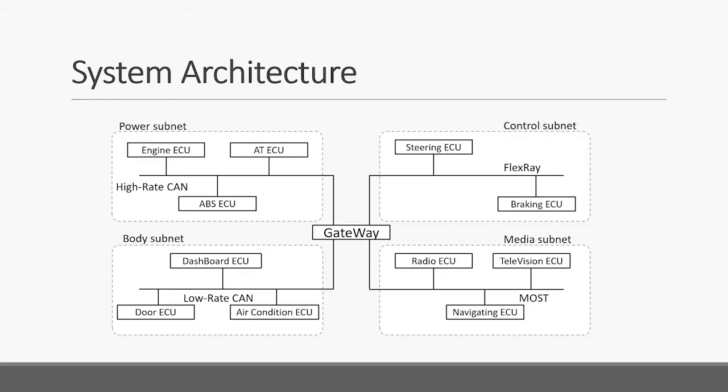Let's review the system architecture of the in-vehicle network. There are many subnets running different kinds of protocols in the network. These subnets are connected by the central gateway. In our proposed protocol, we call the gateway module IG ECU, a special kind of ECU.